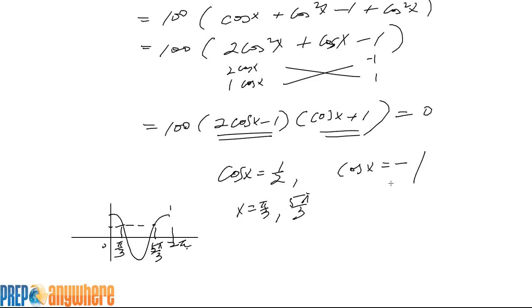5π over 3, and where does it equal negative 1? That happens exactly at π. So those three are your critical numbers.